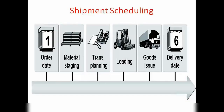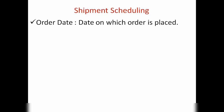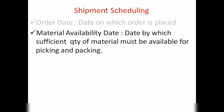As you can see in a sales order, there are different types of dates. Order date is the date on which we place a sales order. Then we have material availability date — this is the date by which a sufficient quantity of material must be available for picking and packing. This is the date when we should have the material available in the warehouse or in the plant, whether it's coming from a third-party vendor or manufactured in our own plant, so that we can pick, pack, and ship it to the customer.